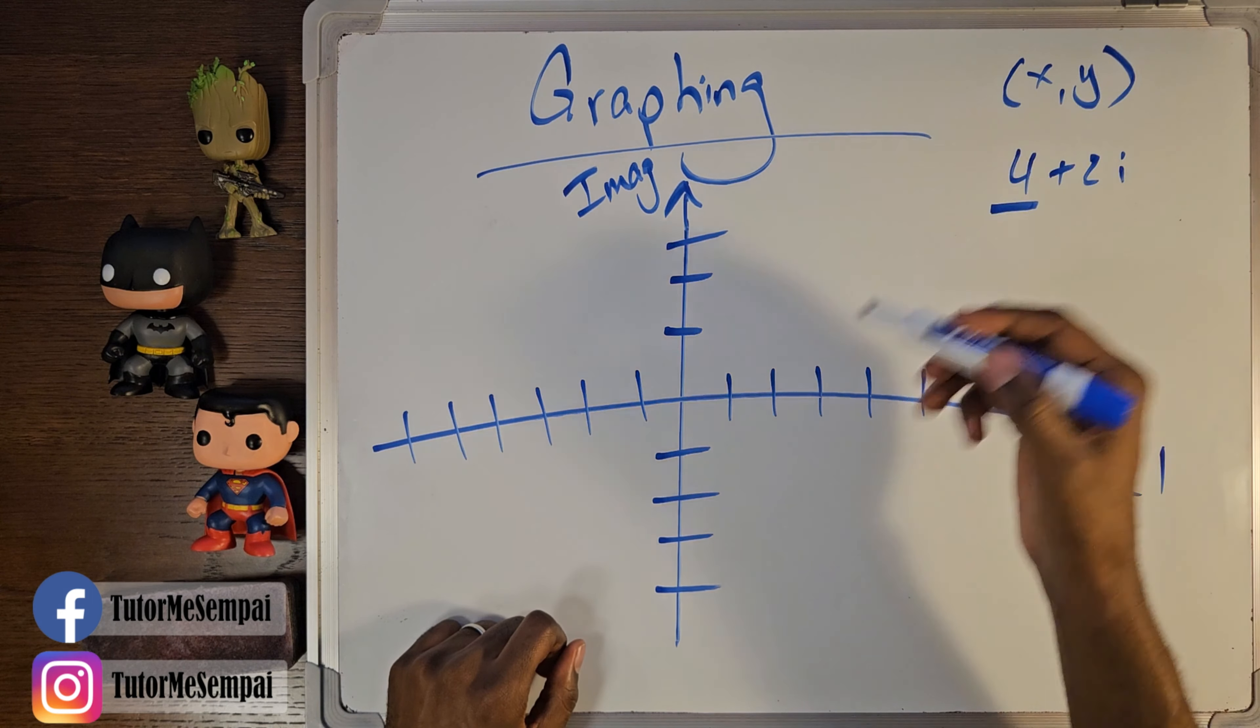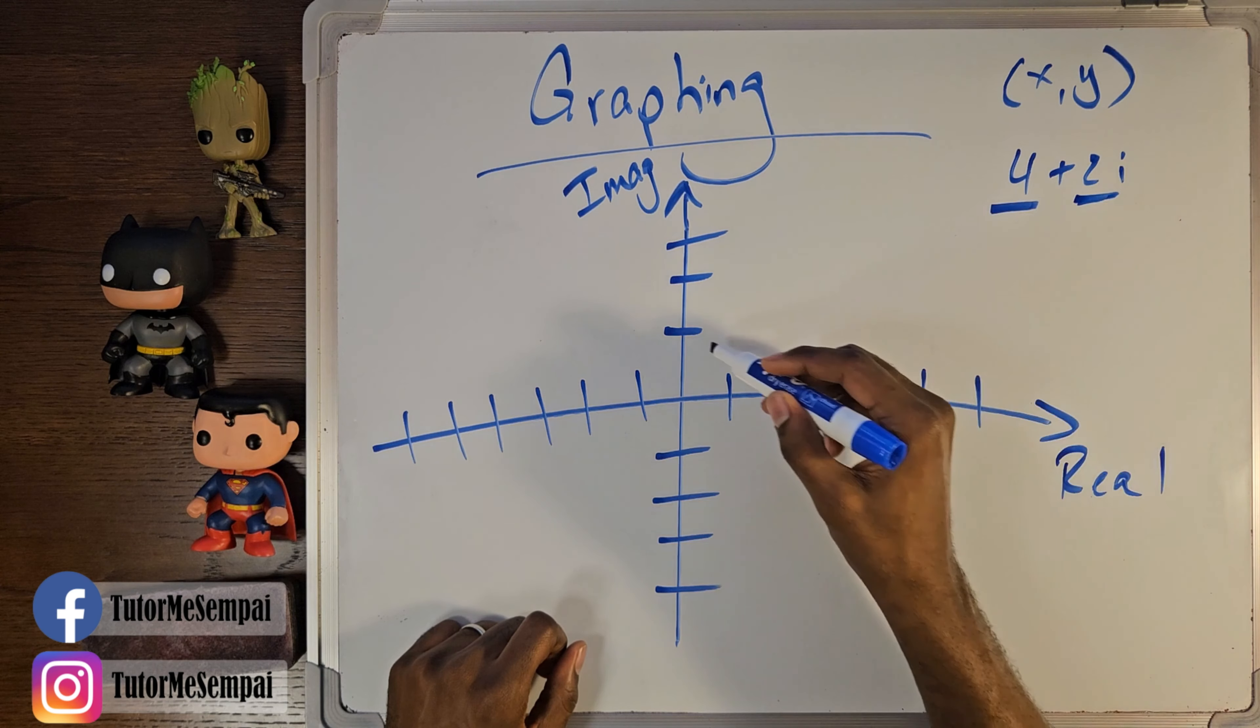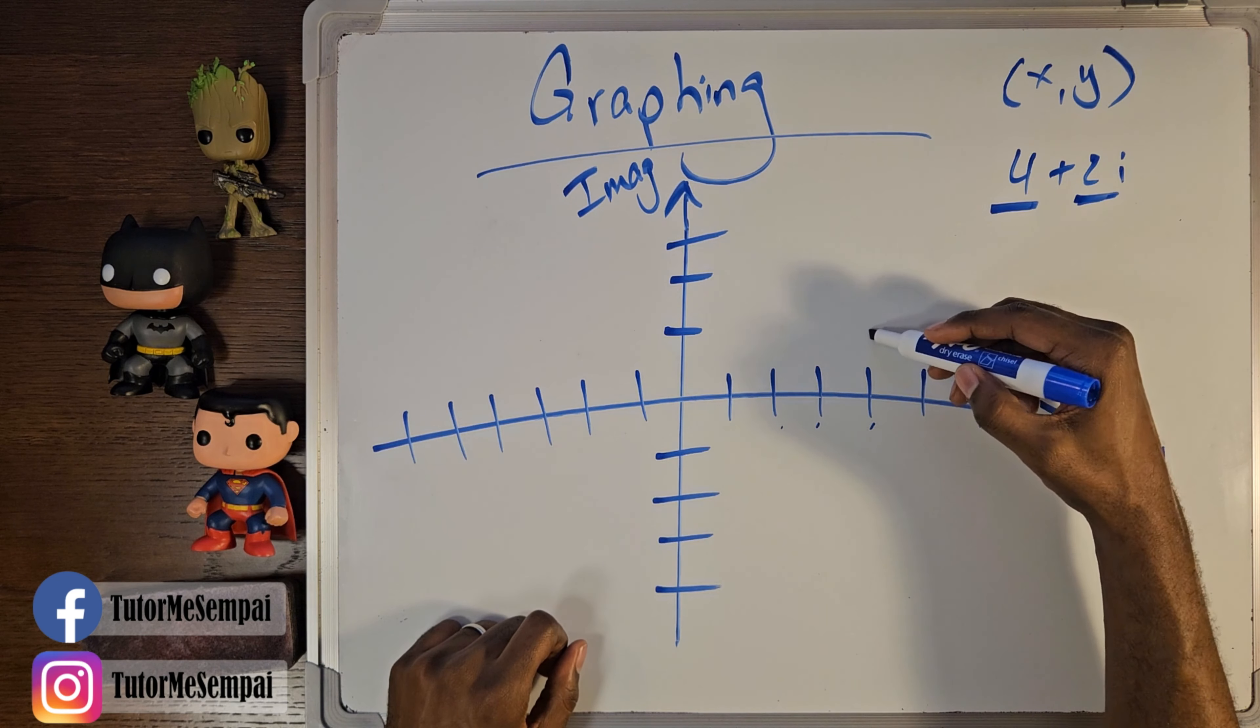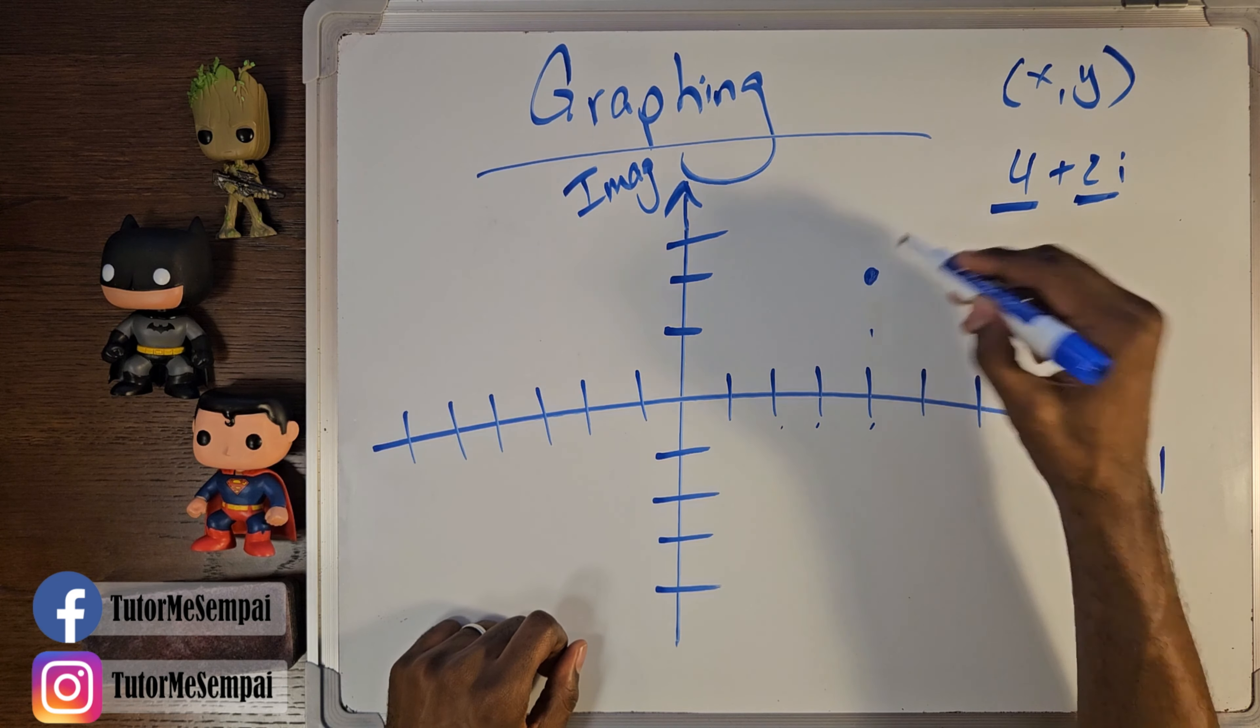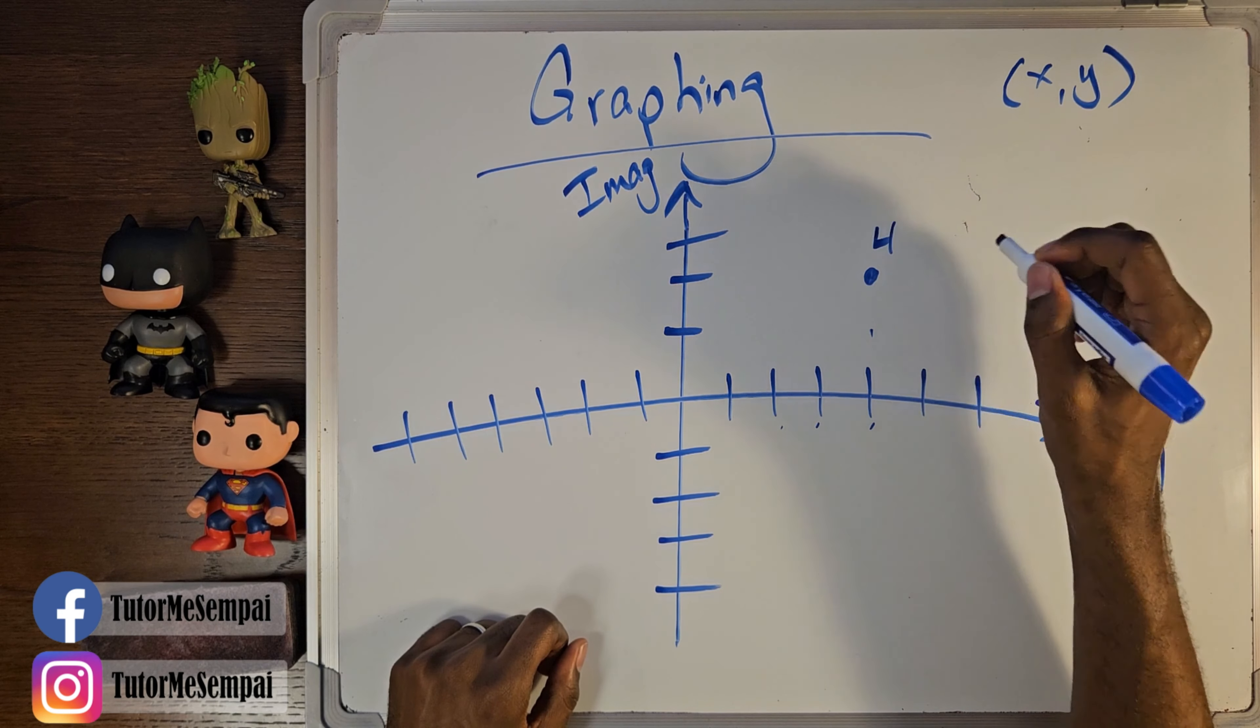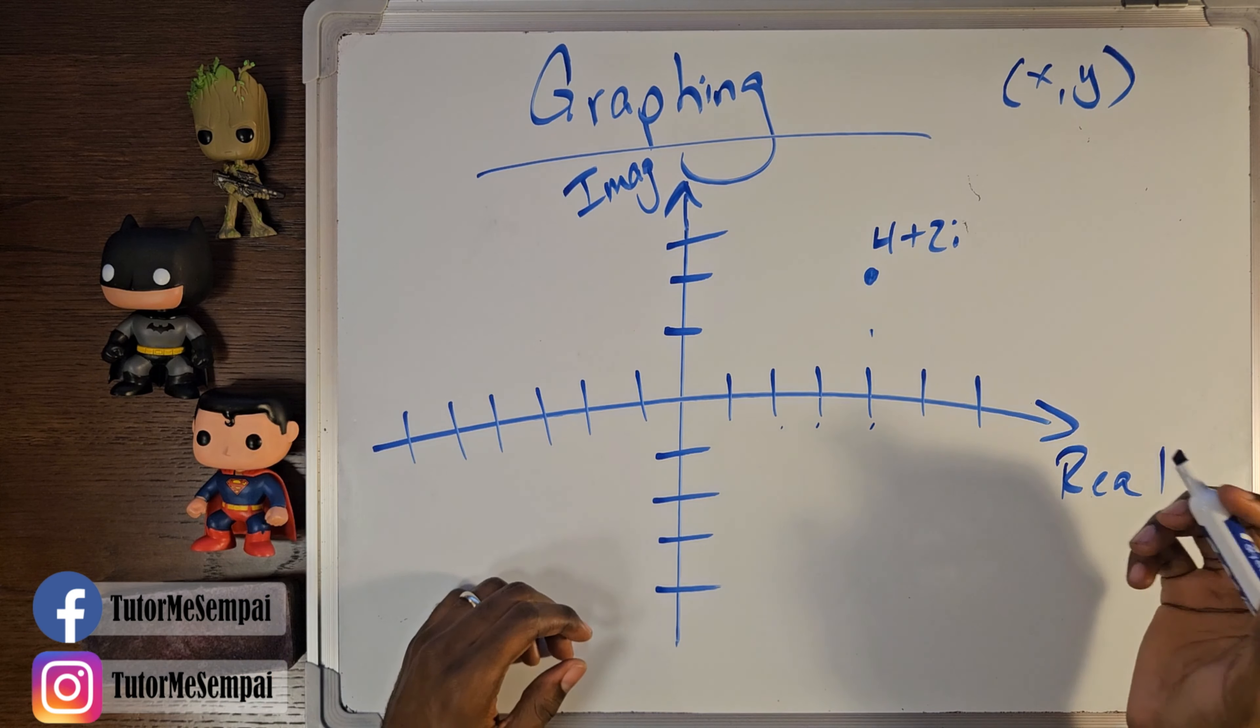And just like your y component, you would move up and down the imaginary axis for this component here. It lets us know we're going to be moving up 2. So 1, 2, 3, 4, 1, 2. If we're going to graph that, we're going to say this point here is our 4 plus 2i.